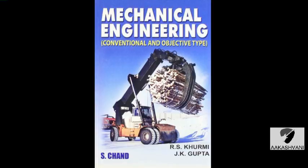Question number 86: Which of the following process of steel making is in operation at Tata Iron and Steel Works, Jamshedpur? Question number 87: Duplex process of steel making is a combination of acid Bessemer and basic open hearth process. Question number 88: The phosphorus and sulfur in steel making can be removed by using the basic Bessemer process. Correct.